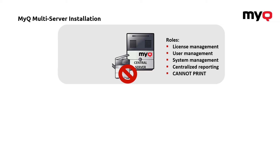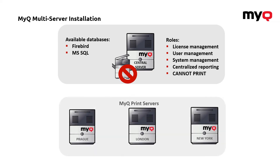For printing, there are the sites, as I will show you in a couple of seconds. One last piece of information about the central server concerns the databases for which it has been built — you can either use it with a Firebird or MS SQL database. As we spoke about the central server, the next really important component is the actual print server. Because it's a multi-server installation, there will be multiple of those. In my example, I've got three servers: one in Prague, one in London, and one in New York.